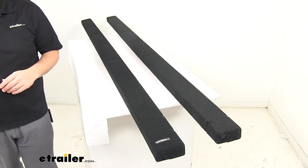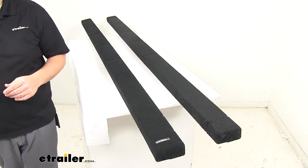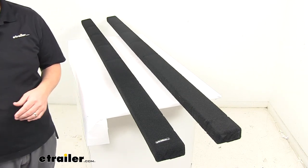That's going to do it for today's look at the C.E. Smith carpeted bunk boards for boat trailers, measuring seven feet long.